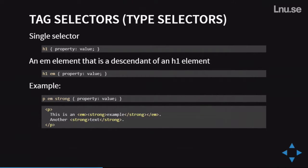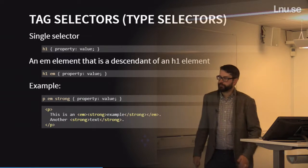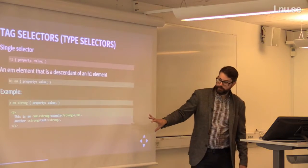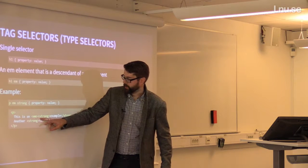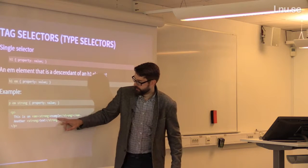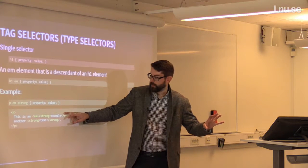A question came up: if an element has both class 'active' set to red and class 'avatar' set to blue, which wins? The order in the HTML doesn't matter — what matters is the order in the CSS. If .active comes before .avatar in the CSS, the last one (.avatar) will be rendered. If you flip the order, the result is the opposite. You need to look at the CSS to answer that question, not the HTML.